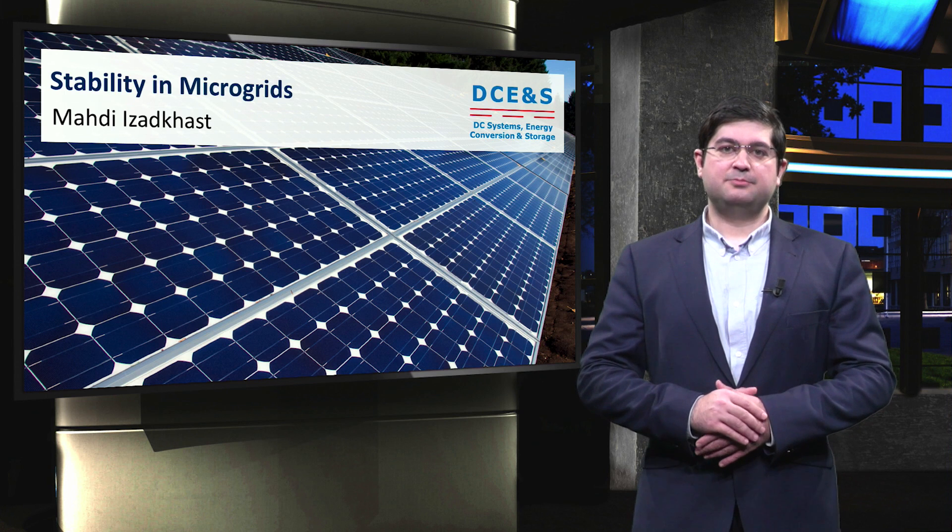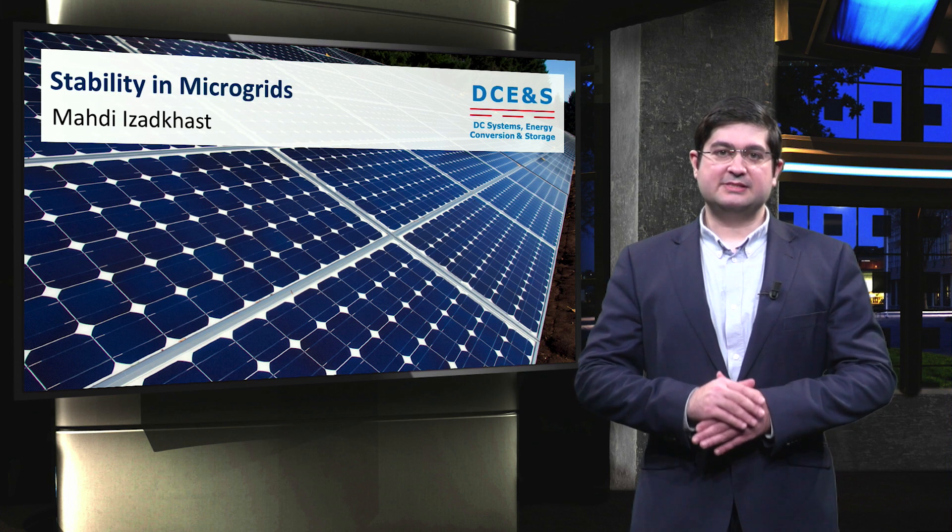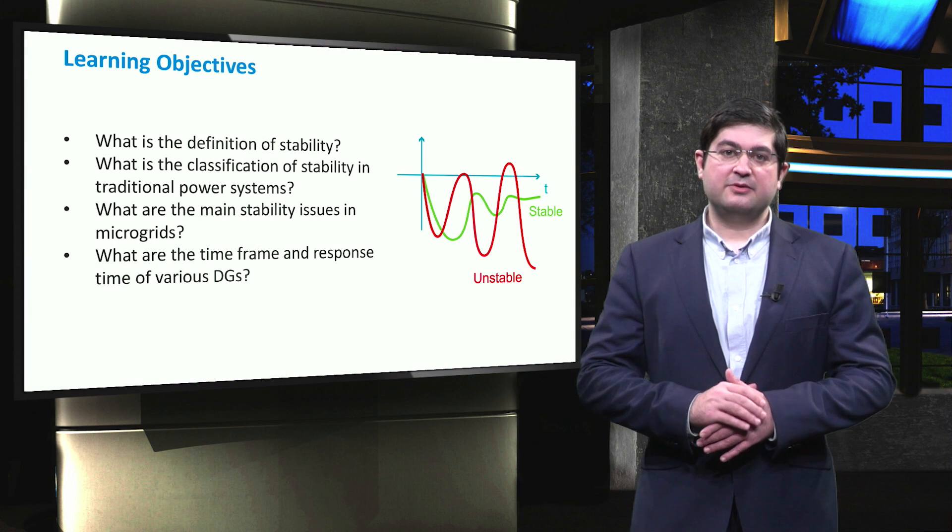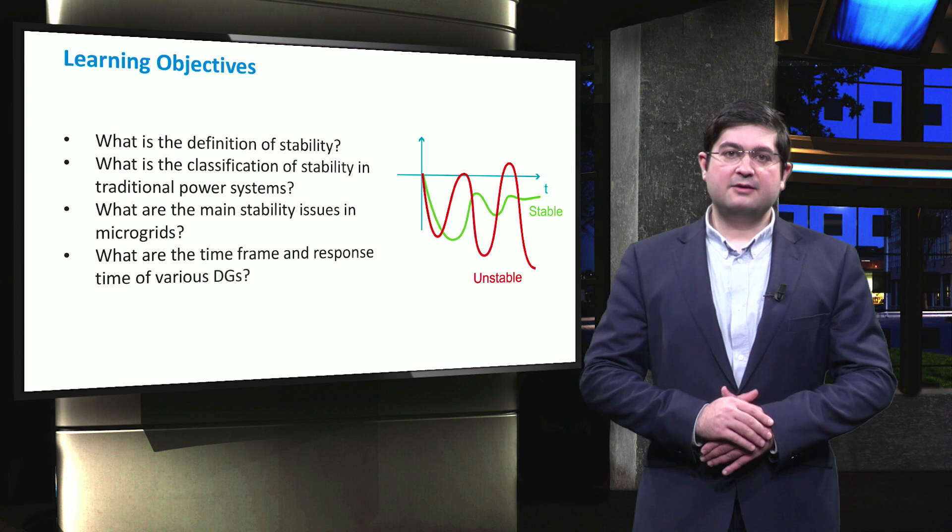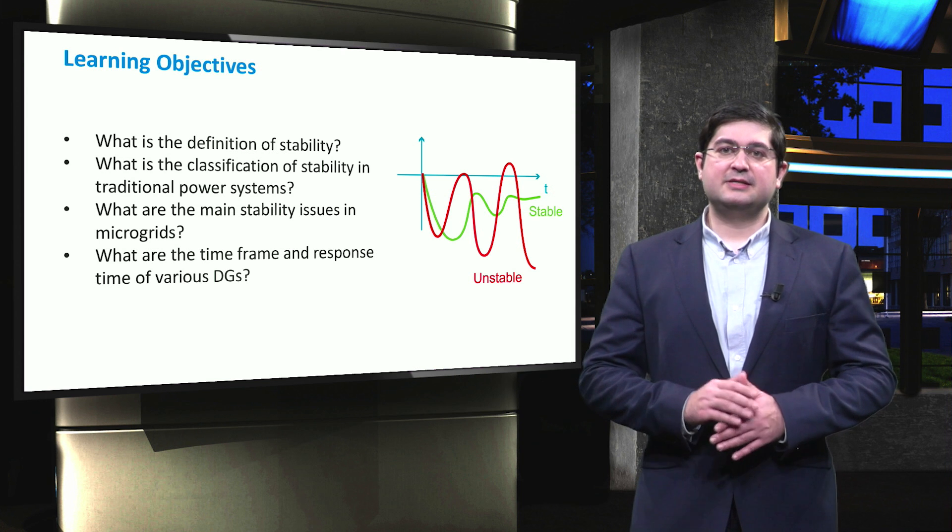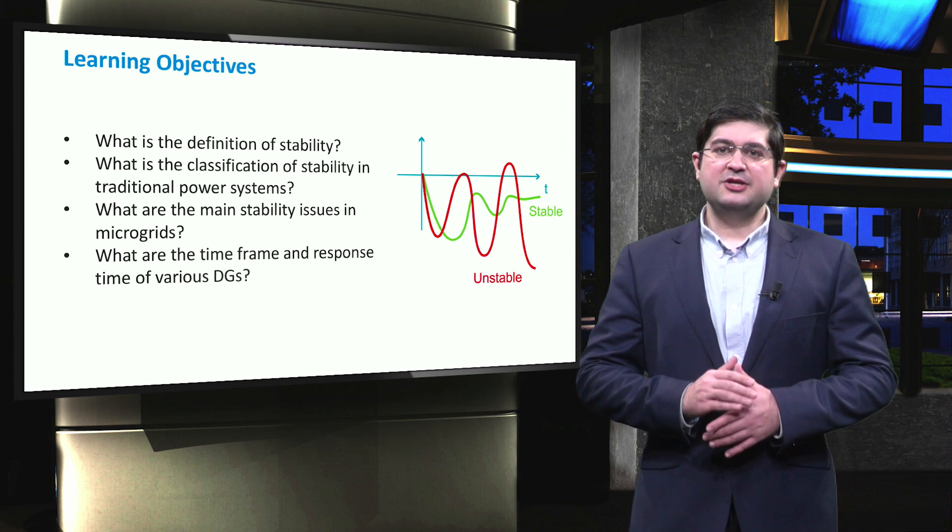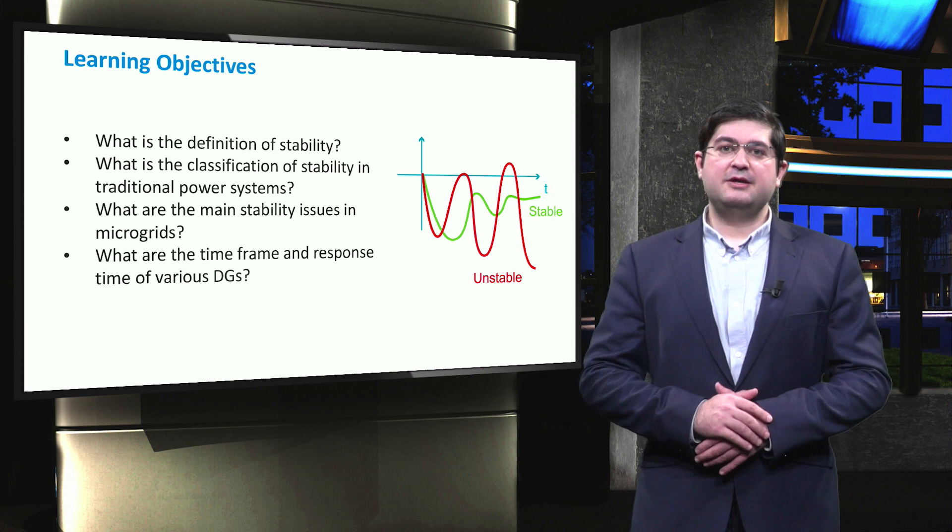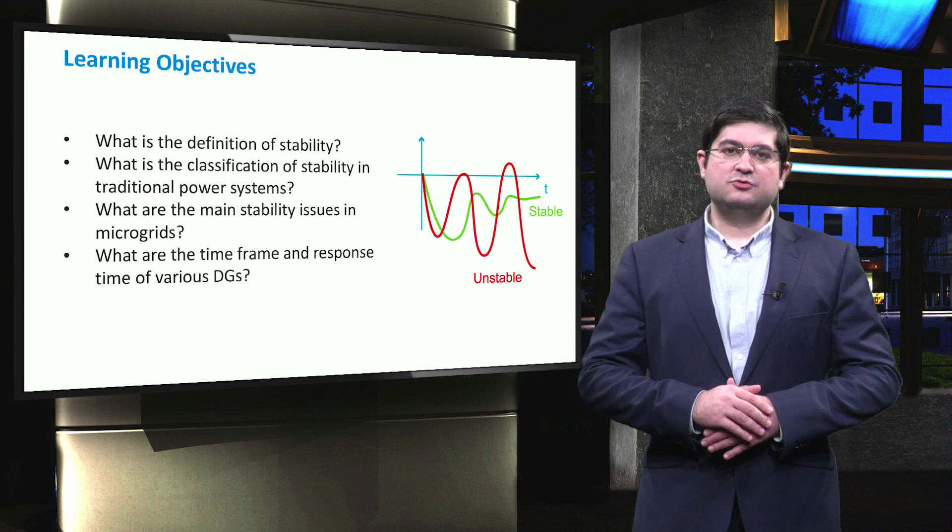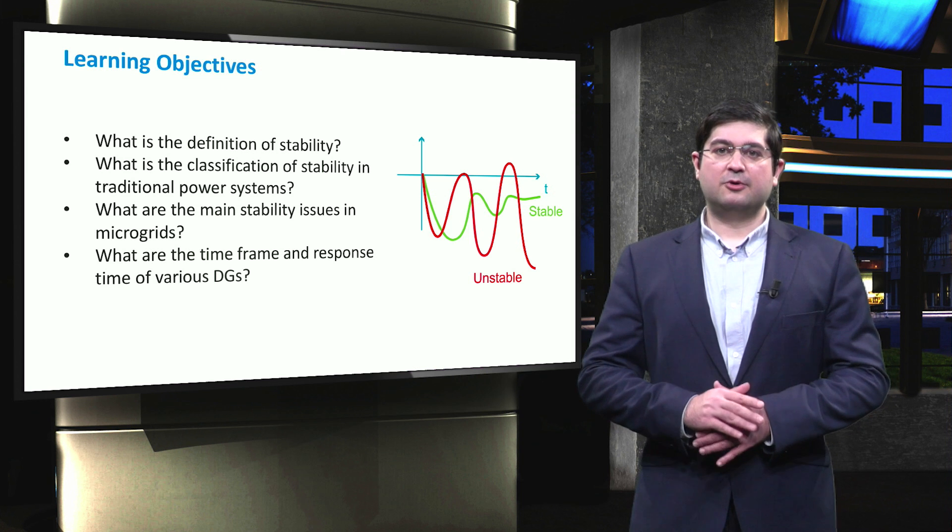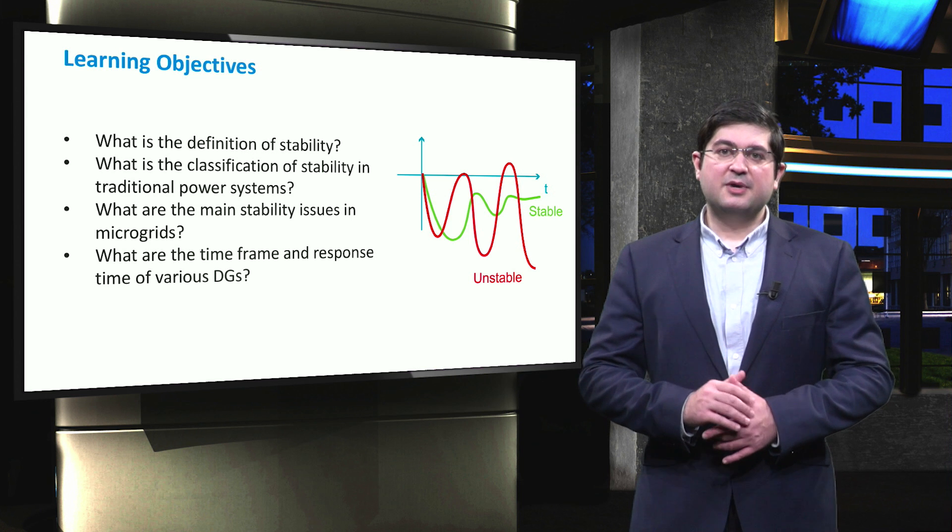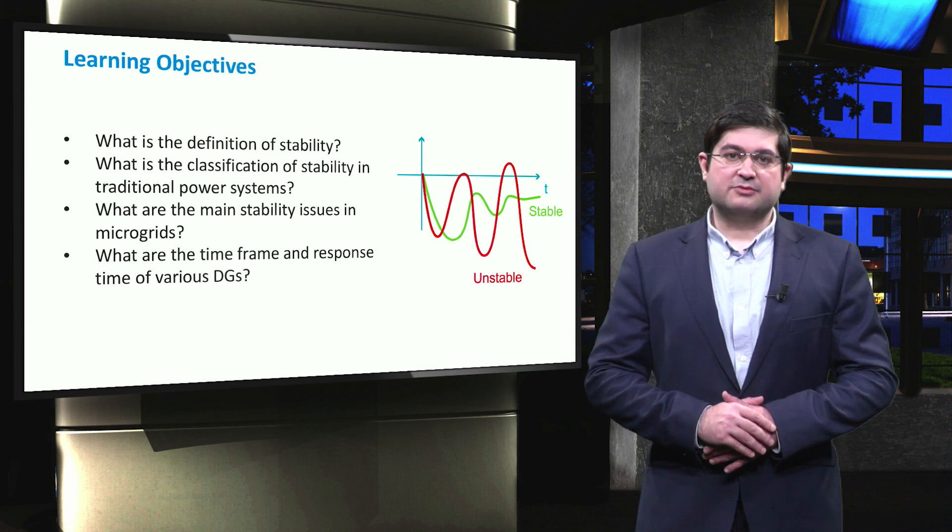In this video, we address both voltage and frequency stability in microgrids. The main learning objectives will fall under four main questions. Firstly, what is the definition of stability? Secondly, what is the classification of stability in traditional power systems? Thirdly, what are the main stability issues in microgrids? Fourth, what are the response time of various DG units that determine the level of frequency stability in microgrids?